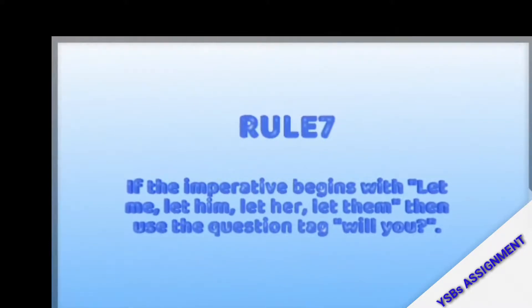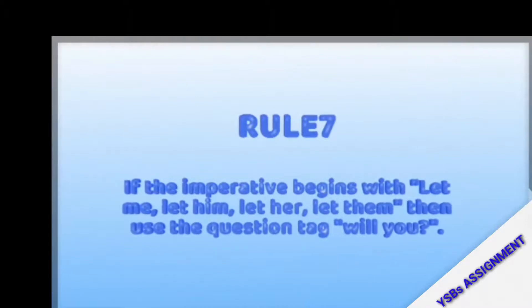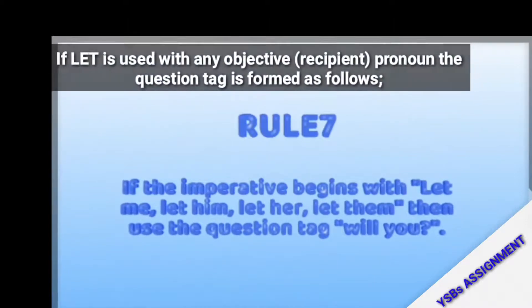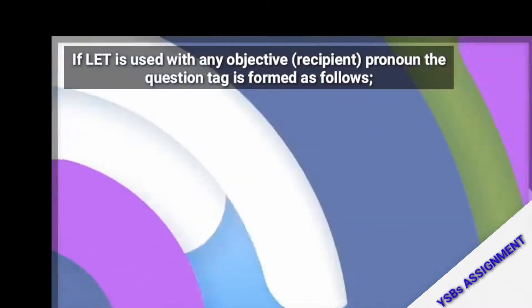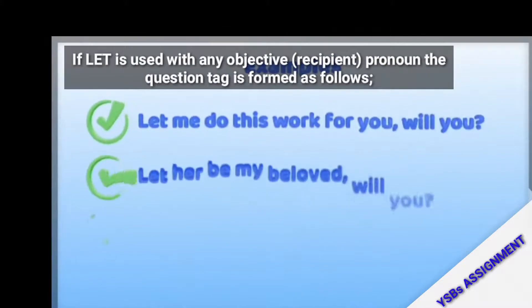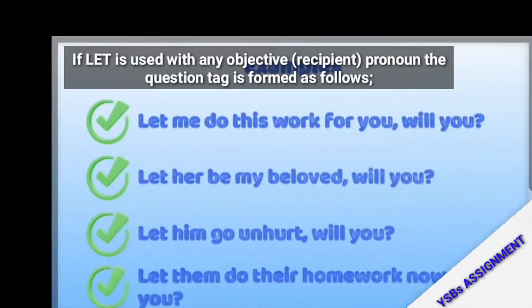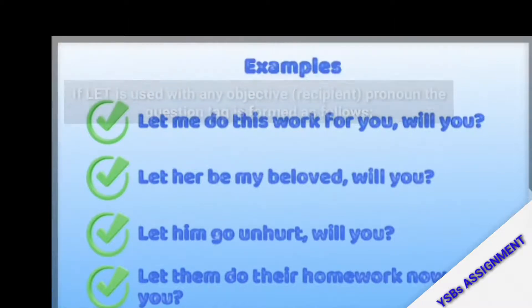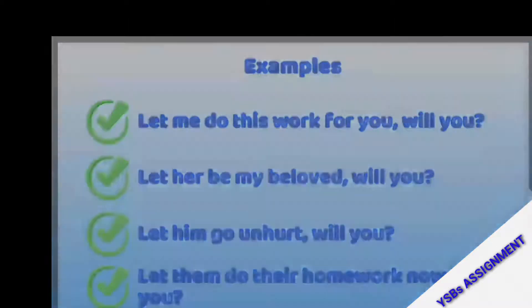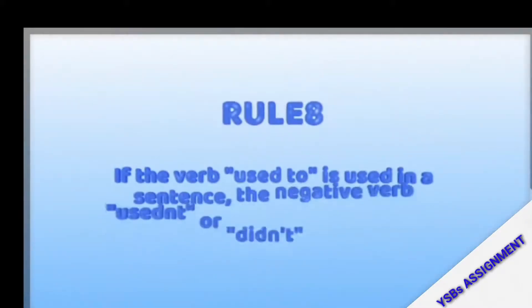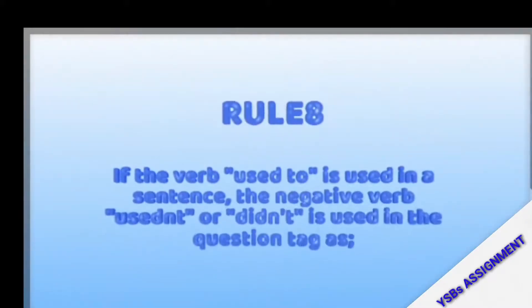Rule number seven: if the imperative begins with 'let me,' 'let him,' 'let her,' or 'let them,' use the question tag 'will you.' Examples: 'Let me do this work for you, will you?' / 'Let her be my beloved, will you?' / 'Let him go on, will you?'